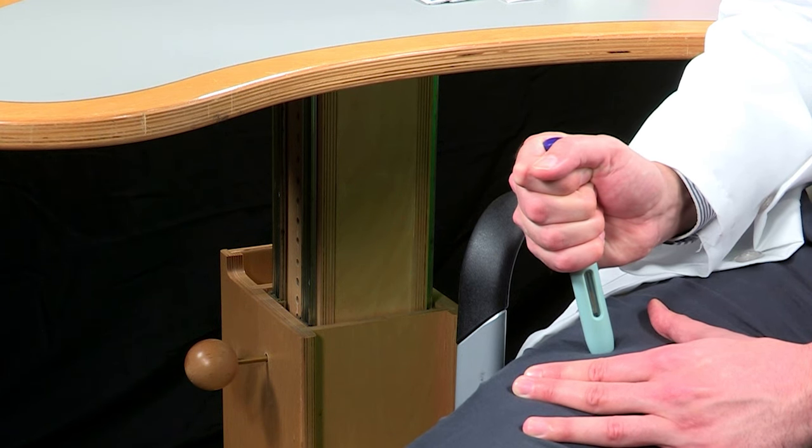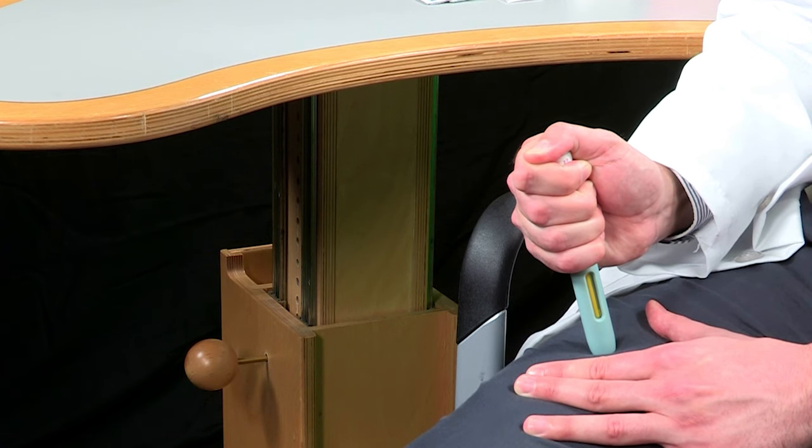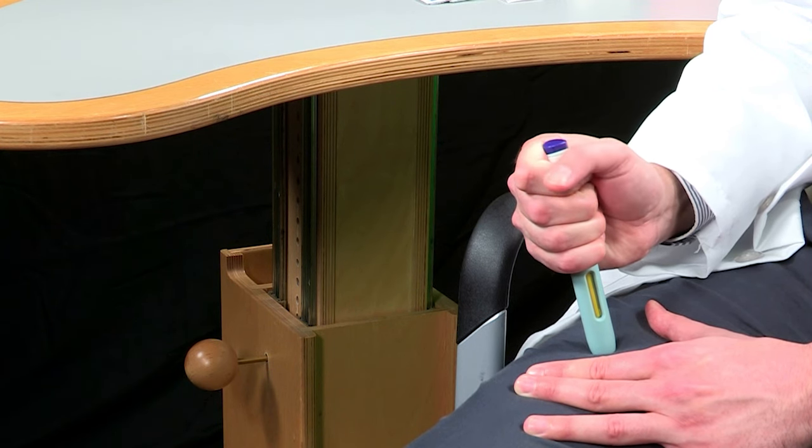When you are ready to inject, press the purple start button. You will hear a click. Keep pushing down on your skin. Then lift your thumb while still holding the autoinjector on your skin.